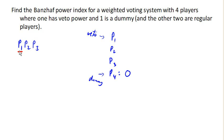And then they would also have veto power. Which means that player one and player two, and player one and player three, must also be winning coalitions where each player is critical. This is the only way that player two and player three are not dummies but do not also have veto power. It must be the case that these two are winning coalitions.